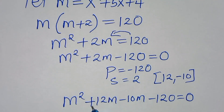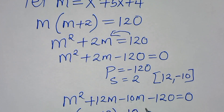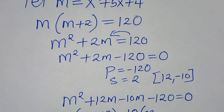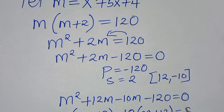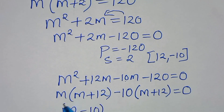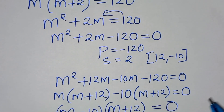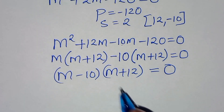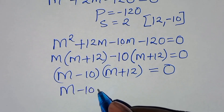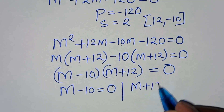Factoring: m(m+12) - 10(m+12) = 0, so (m-10)(m+12) = 0. This gives two equations: m-10 = 0 and m+12 = 0.